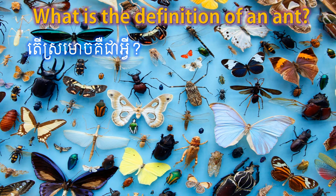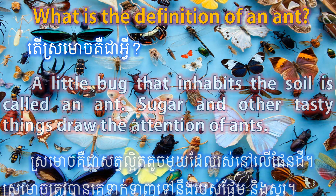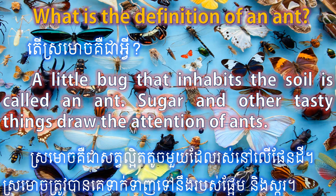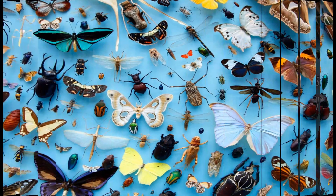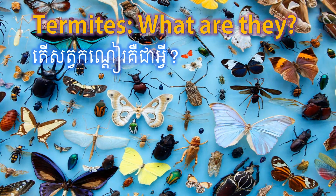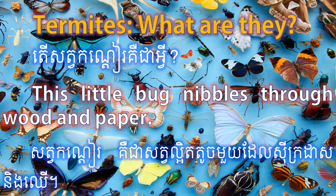What is the definition of an ant? A little bug that inhabits the soil is called an ant. Sugar and other tasty things draw the attention of ants. Termites — what are they? This little bug nibbles through wood and paper.